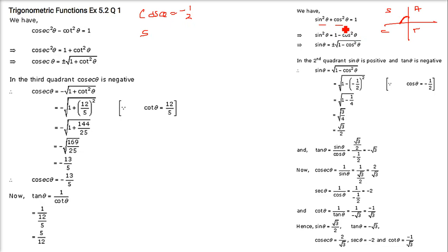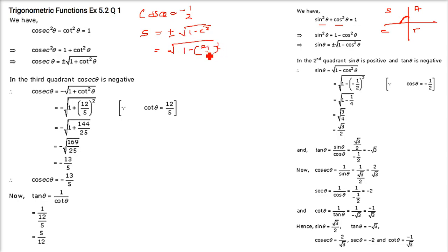To find sin θ, we use sin²θ + cos²θ = 1, so sin θ = ±√(1 - cos²θ). Since sin is positive in the second quadrant, we take the positive sign. Sin θ = √(1 - (-1/2)²) = √(1 - 1/4) = √(3/4) = √3/2.